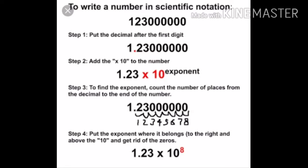Step 2: Add the multiplication by 10 raised to an exponent. Step 3: Find the exponent by counting how many places the decimal point moved. In this example, the answer is 1.23 × 10^8, so the exponent is 8.